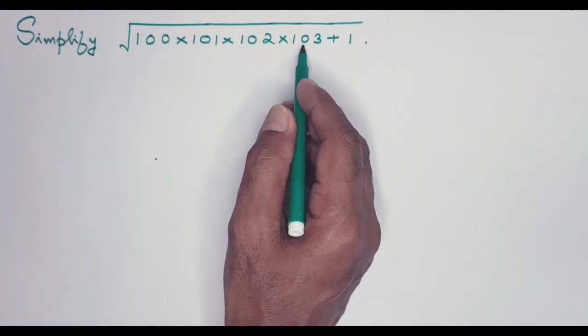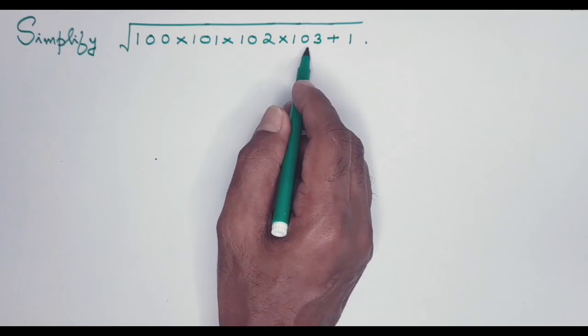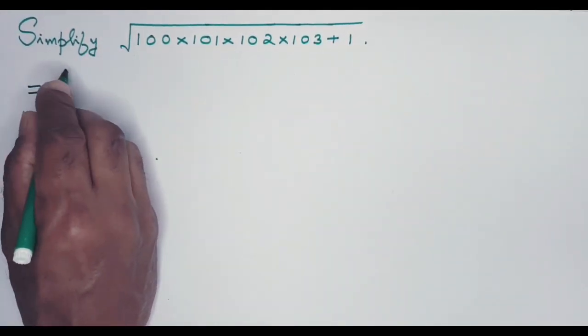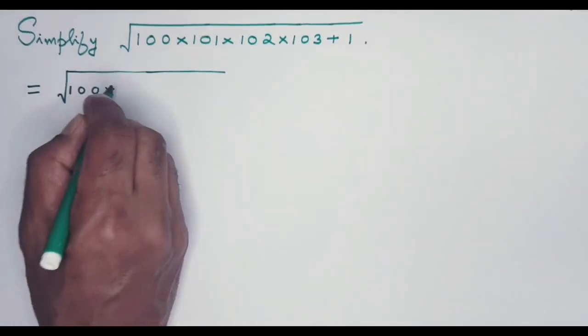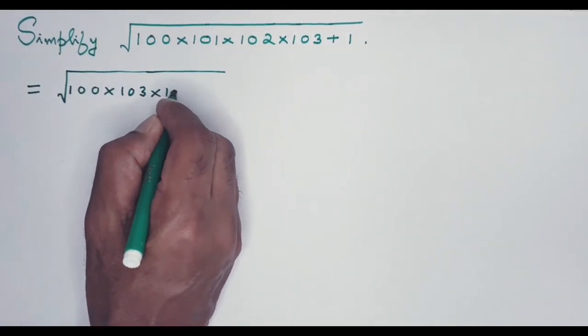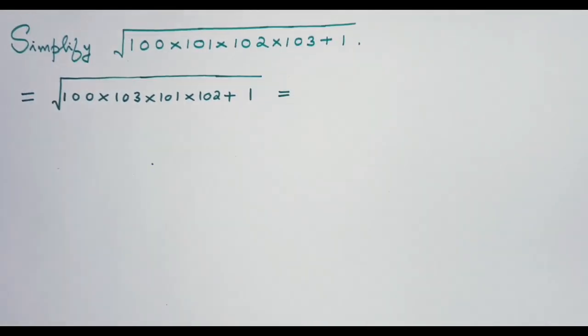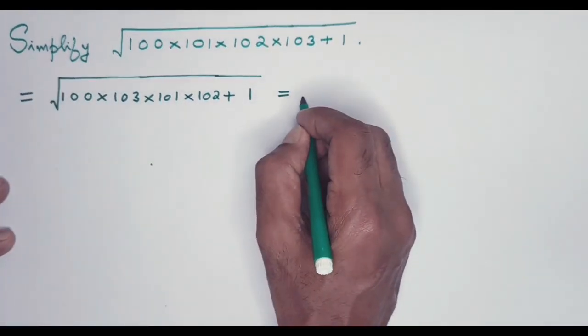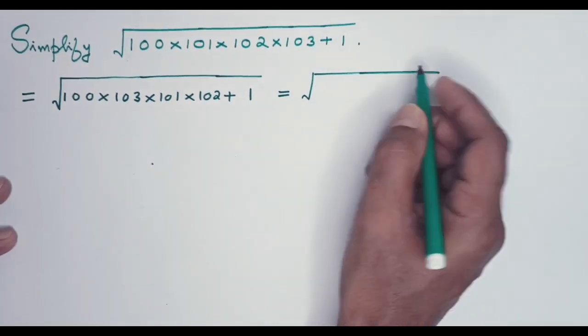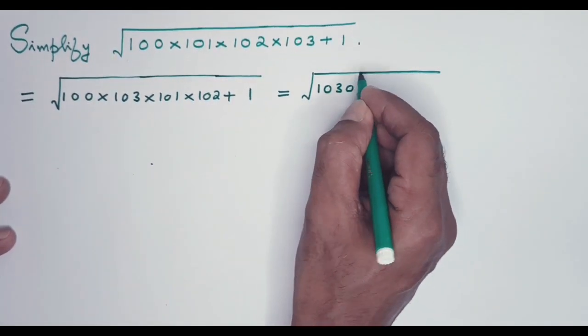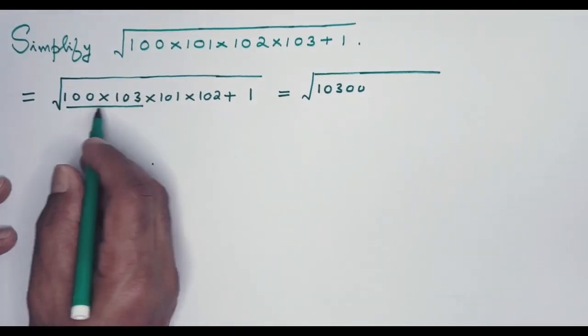By the way, if you're watching my channel for the first time, please do subscribe. So let's come to the problem. In this expression, let's combine the first and the fourth, 100 and 103. So the given expression you can write like this: 100, this I am writing first, then comes 101, 102, then there is this plus 1.